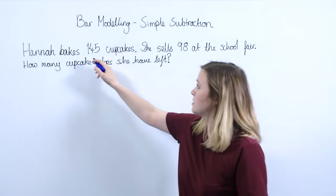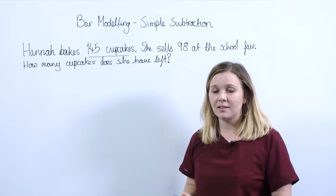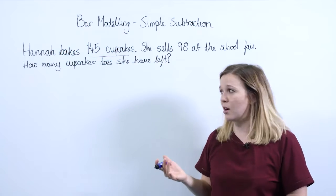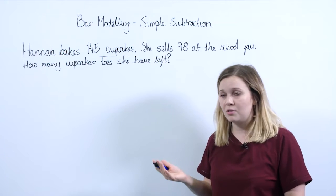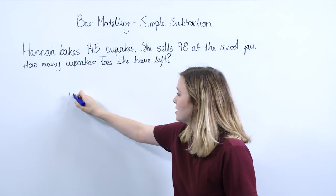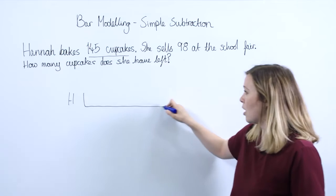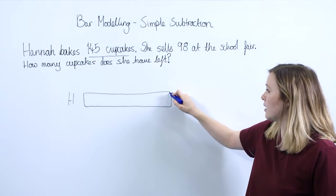So I want to underline first of all 145 cupcakes. This is the total number that we start with and we're going to represent that using our bar. So let's put an H for Hannah and then we're going to draw a whole bar to represent that 145.